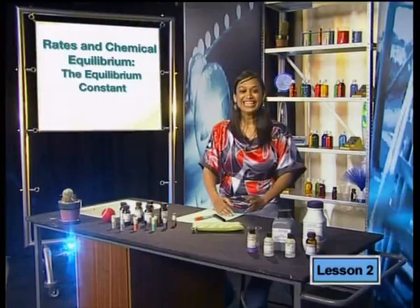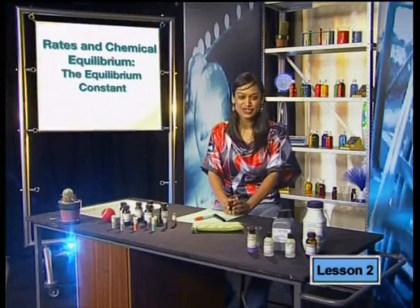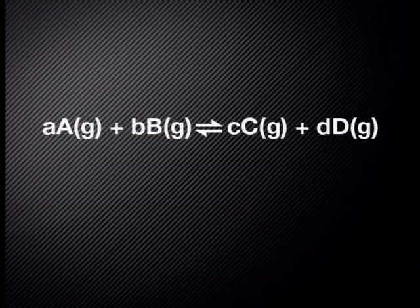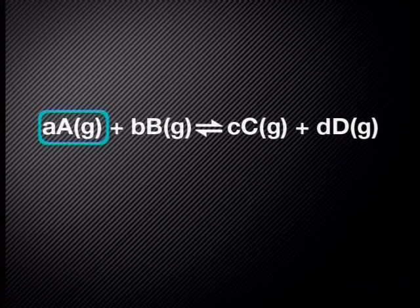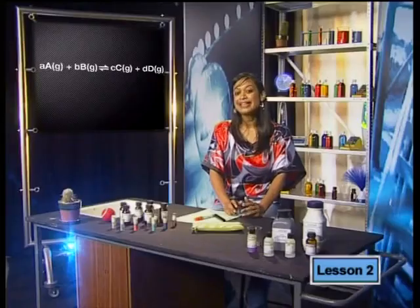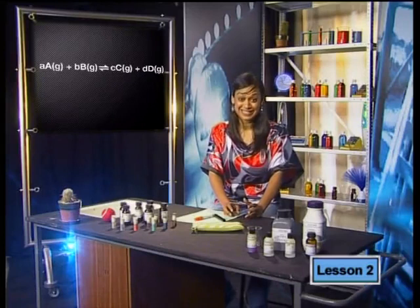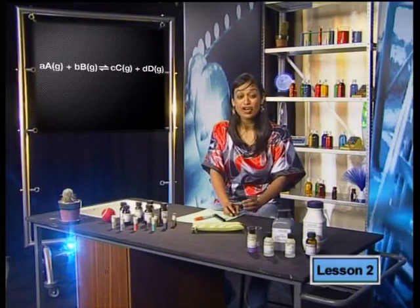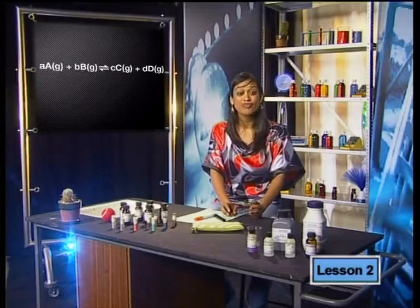Now, Amira will explain another concept called the equilibrium constant. Let's begin by looking at the special formula chemists use to define the equilibrium constant. Here is a general chemical equation in which two gases react together to form two different gaseous products. We write the equation as A moles of A reacts with B moles of B to form C moles of C and D moles of D. In this reaction, A and B are reactants and C and D are products, and the lowercase letter in front of each substance indicates the ratio of moles reacting.